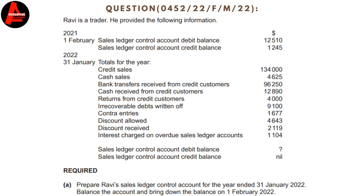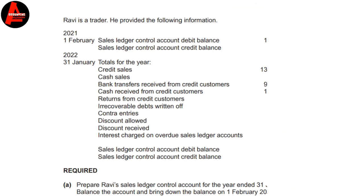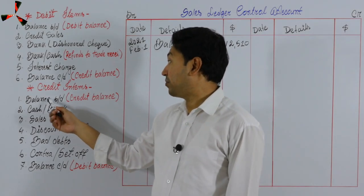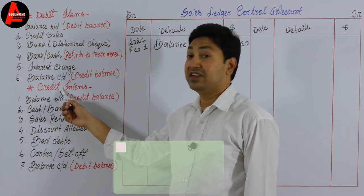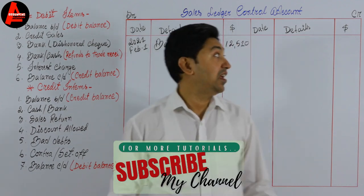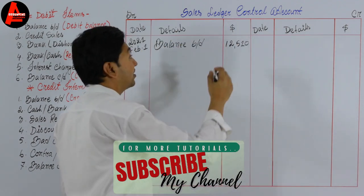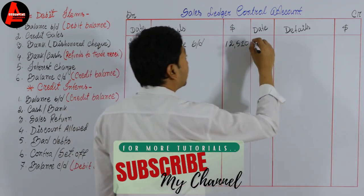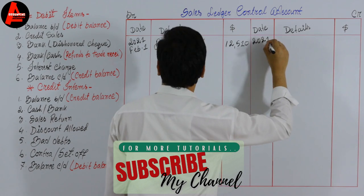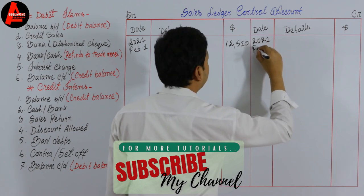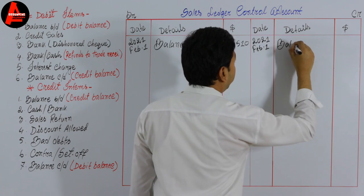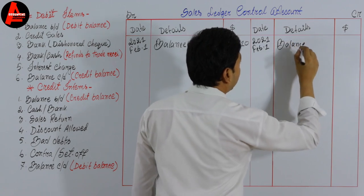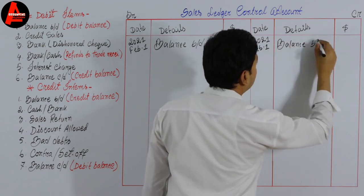We also have a credit balance of $1,245. If we see a credit balance, we need to write it on the credit side. So the date is the same — 2021, February 1st — and we write balance b/d. B/d stands for 'brought down.' The amount is $1,245.